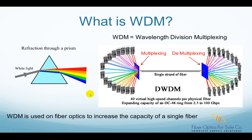WDM uses this same idea. Traditionally, only one colored light was used on a single strand of fiber to carry the information, such as 1550nm light. However, starting from the early 1990s, the internet boom pushed service providers to find a method to increase the capacity on their network in the most economical way. That is when WDM devices were invented.